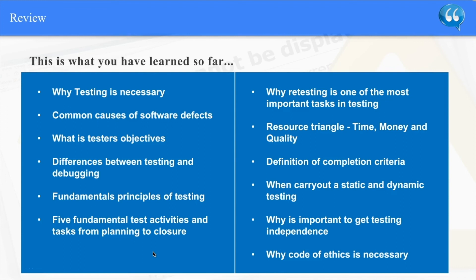You've completed the first section — section one out of six. You've learned a bunch of information that's going to be beneficial for your ISTQB exam. Here's what you covered: why testing is necessary, common causes of software defects, what are testing's objectives, differences between testing and debugging, fundamental principles of testing, the five fundamental test activities and tasks from planning to closure, why retesting is one of the most important tasks in testing, the resource triangle — time, money, and quality, you can only have two — definition of completion criteria and when the project ends, when to carry out static and dynamic testing, why test independence is important, and why the code of ethics is necessary.